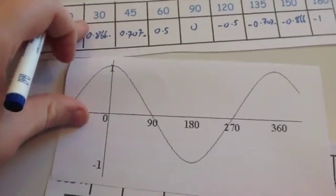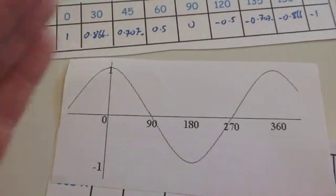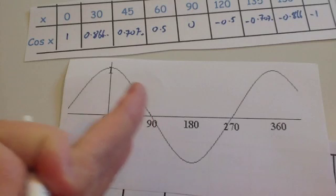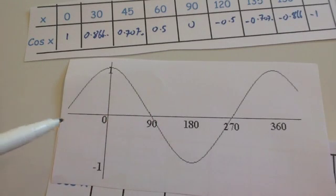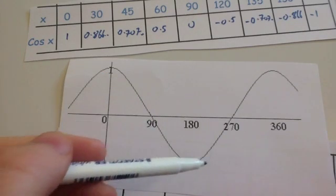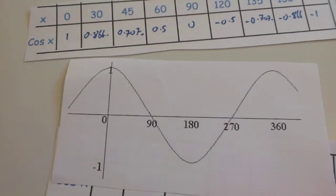So it looks very similar to the sin graph, it's just that it's been pushed over 90 degrees to the left. It starts off at 1, goes down to 0, minus 1, 0, 1 and so on. It just repeats.